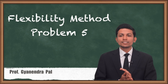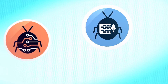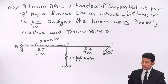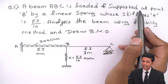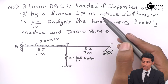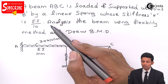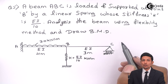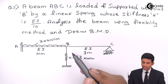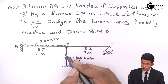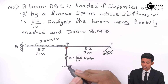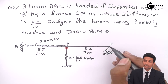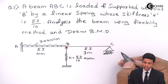Let's see in detail what the special cases are in problem number five. The question given to us: a beam ABC is loaded and supported at point B by a linear spring whose stiffness k is EI by 10. Analyze the beam using the flexibility method and draw the bending moment diagram. This B is nothing but a spring supported at the bottom — we will consider it as a point load at B. C is a roller support.